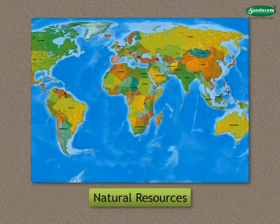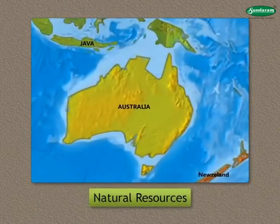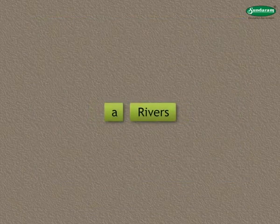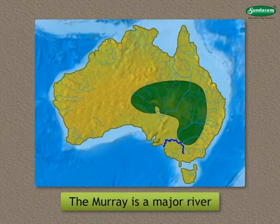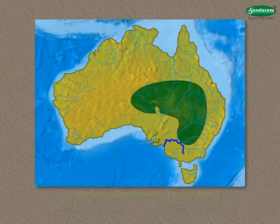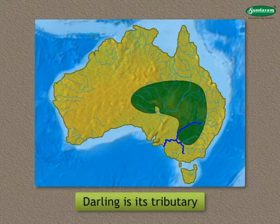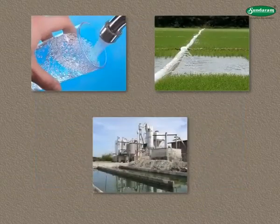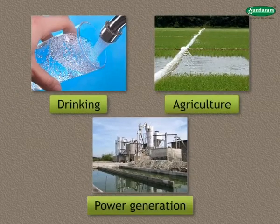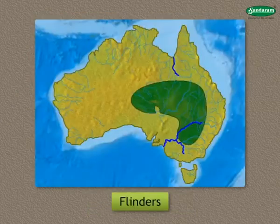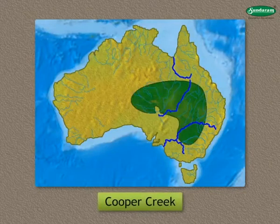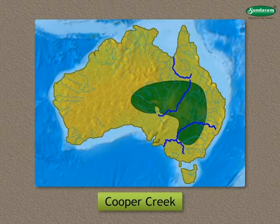Let us see the natural resources of Australia. Water Resources - Rivers: The Murray is a major river in the southeastern part of the continent. The River Darling is its tributary. The water of these rivers is used for drinking, agriculture and power generation. Flinders, Thompson, Namoy, and Cooper Creek are the other major rivers.